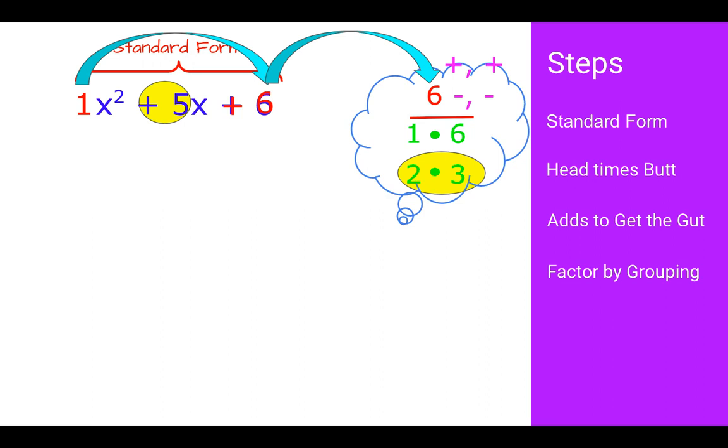We're going to start factor by grouping. We start out with three terms. I am going to take this middle term, 5x, and separate it out into two different terms, 2x and 3x. I have not changed my problem. I have just taken 5x and made it 2x plus 3x, they're equivalent. It doesn't matter if you do 2x plus 3x or 3x plus 2x. You will end up getting the same thing.